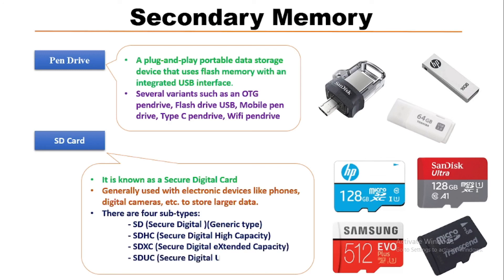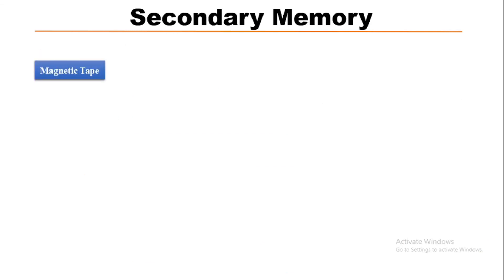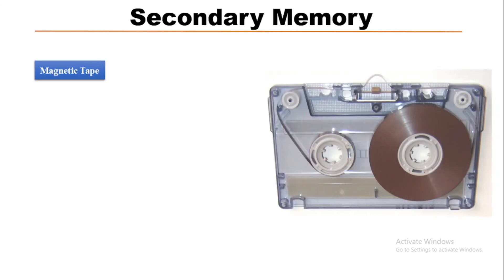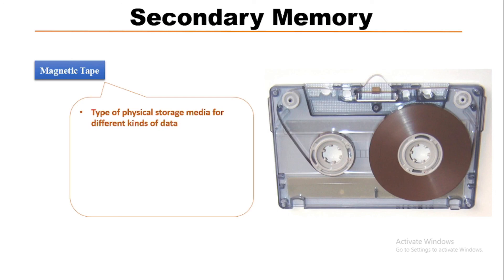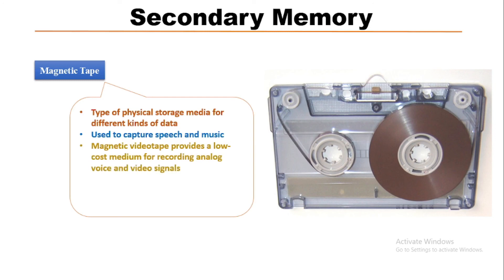Now we will know about the magnetic tapes. This is the outlook of a magnetic tape. It is a type of physical storage media for different kinds of data. It was mainly used in the past to capture speech and music. Magnetic video tapes provide a low-cost medium for recording analog voice and video signals, using a long strip of narrow plastic film with a thin magnetizable coating. These are all about the secondary memory.